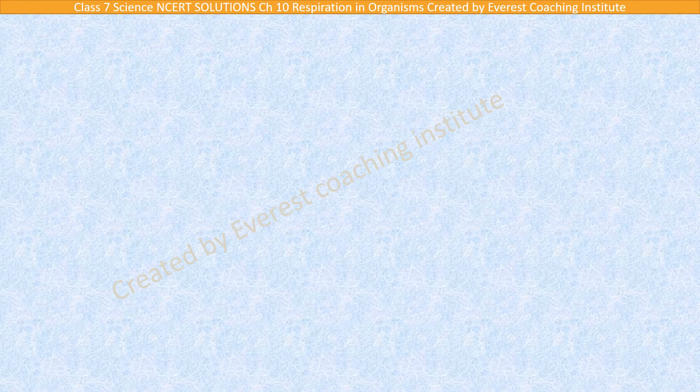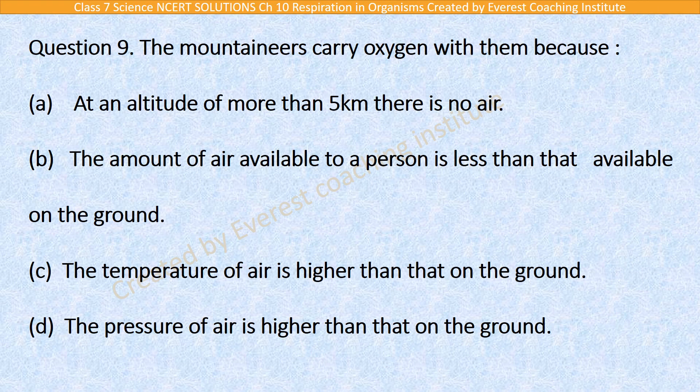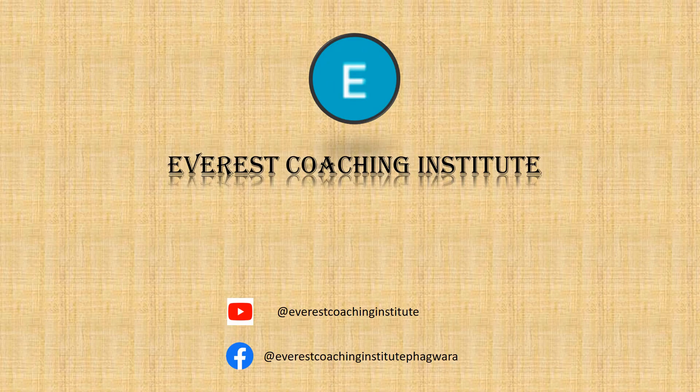Question number 9: Mountaineers carry oxygen with them because: a) at altitude of more than 5 km there is no air, b) the amount of air available to a person is less than that available on the ground, c) the temperature of air is higher than on the ground, or d) the pressure of air is higher than on the ground. The answer is option B — the amount of air available to a person is less than that available on the ground, because as we go up in height, less air is available. This is all about today's video. If you find any difficulty, you are most welcome to give your feedback in the comment box. Thanks for watching.